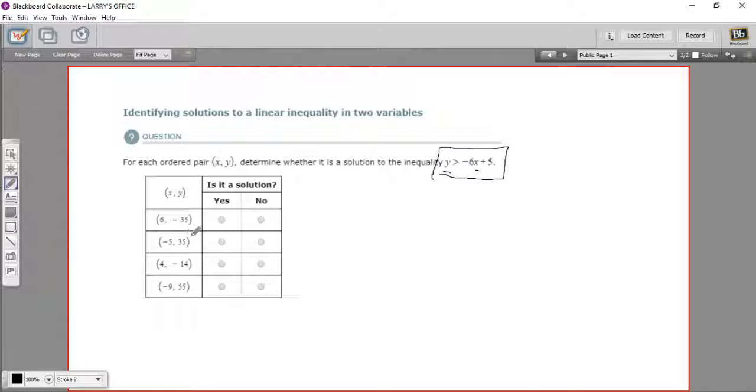In this one, y is negative 35. So instead of y here, I'm going to write negative 35. And then the next thing we have is a greater than sign, and then we have negative 6 times x, but instead of x, I'm going to put in the 6 here, which is the value for x in that ordered pair, and then we have a plus 5. So this is this inequality with these two values plugged in for the x and y. So let's calculate the rest of this and see what we get. Here we have negative 35 greater than, negative 6 times 6 is negative 36, and plus 5.